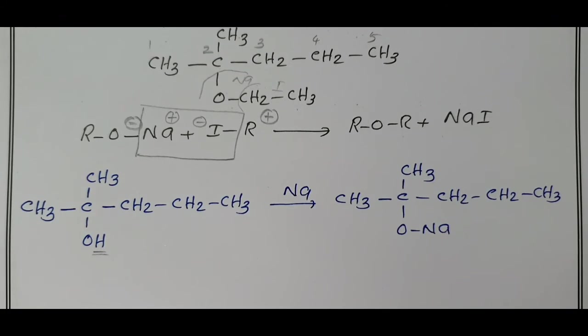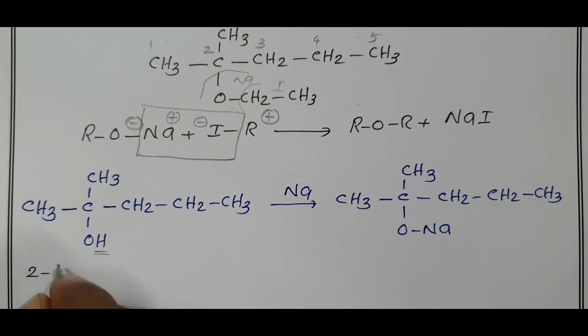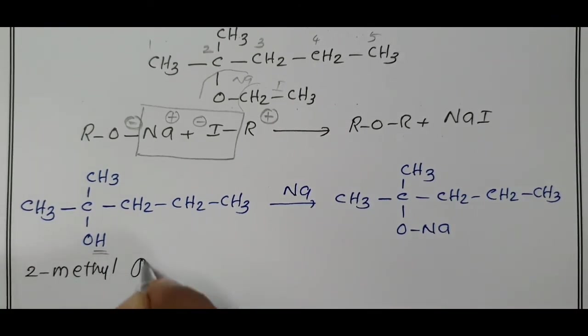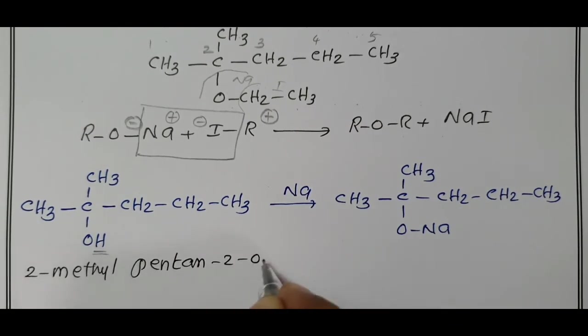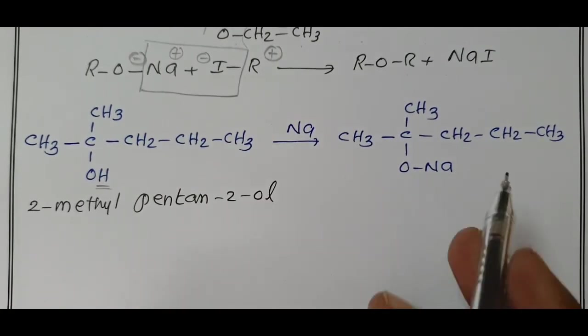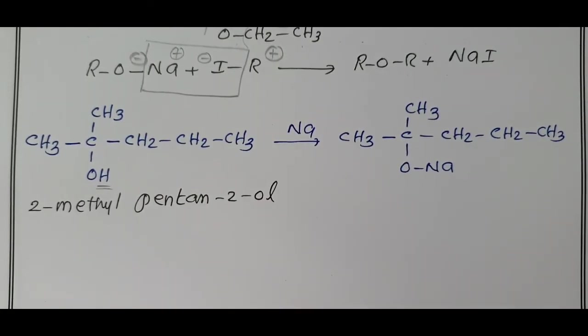The reactant is 2-methyl-pentane-2-ol, that is given in our question. One alkoxide we prepared and another alkyl iodide from ethyl alcohol we are going to prepare.